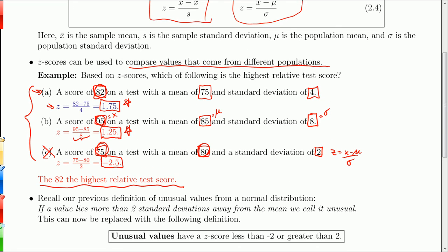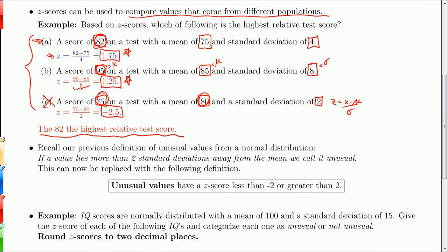Looking at this carefully, you should recognize that we're just counting standard deviations. We've done that once already in the last section where we defined unusual values. In the last chapter, we said if a value lies more than two standard deviations away from the mean, we call it unusual. Well, now we have a way of counting in terms of standard deviations - that's the z-score. The new definition is identical to the old definition: unusual values have a z-score less than negative 2 or greater than 2.